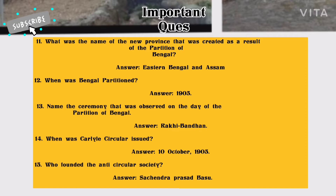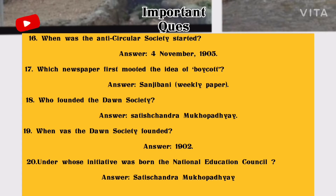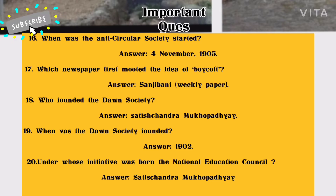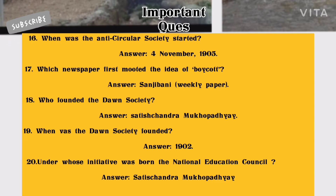Number 15: Who founded the Anti-Circular Society? Answer: Sachindra Prasad Basu. Number 16: When was the Anti-Circular Society started? Answer: 4 November 1905. Number 17: Which newspaper first mooted the idea of boycott? Answer: Sanjivani weekly paper. Number 18: Who founded the Dawn Society? Answer: Satish Chandra Mukhopadhyay.